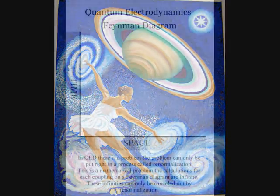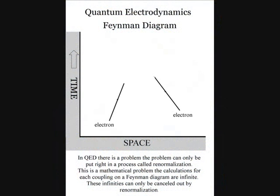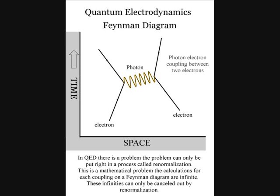In quantum electrodynamics there is a problem. The problem can only be put right in a process called renormalization. This is a mathematical problem.